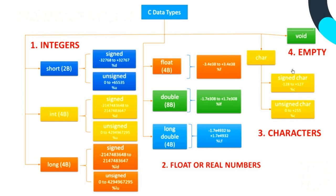These are the basic four data types available in C, as seen through the flowchart. The first is integers, subdivided into short (further subdivided into signed short and unsigned), int (subdivided into signed and unsigned), and long (also subdivided into signed and unsigned). The second is the float data type, or real numbers, subdivided into float, double, and long double.